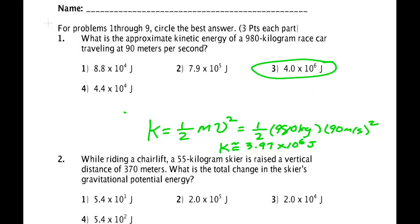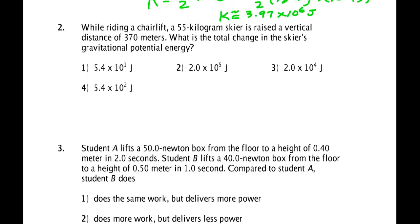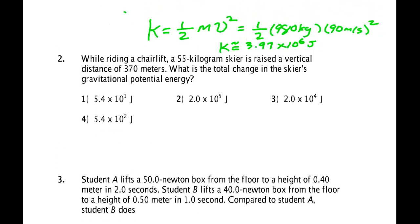In part number two, we're dealing with another plug and chug. It's asking about gravitational potential energy. They're raising it from the ground, which we'll call our y equals zero spot, to some height y equals h, which is 370 meters.